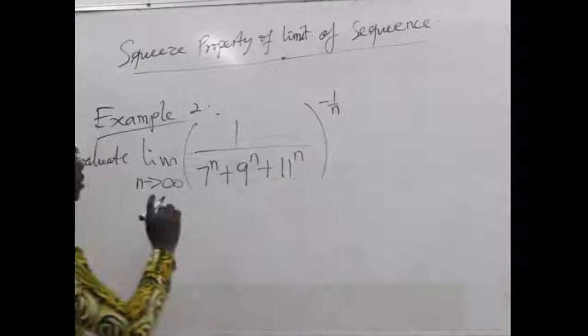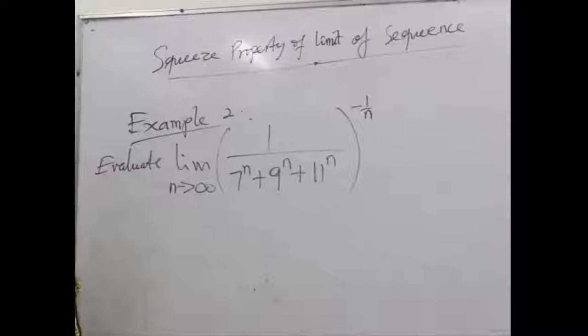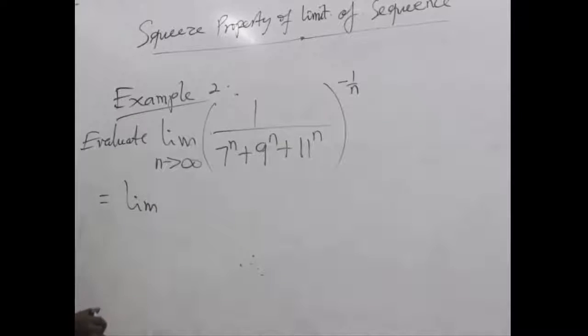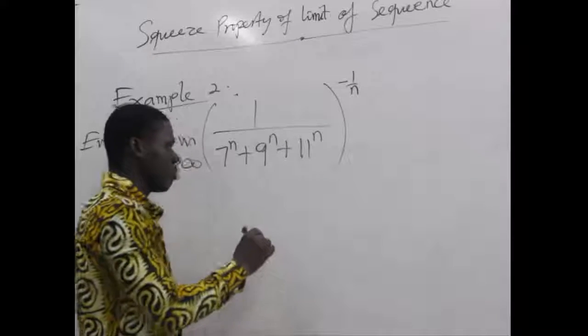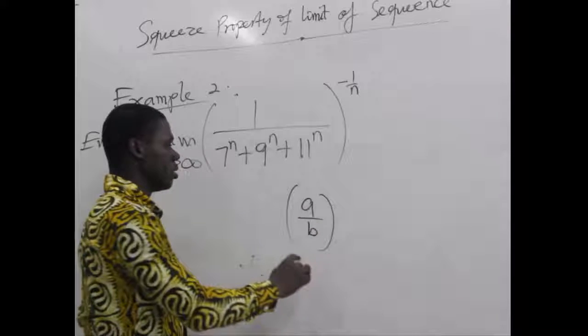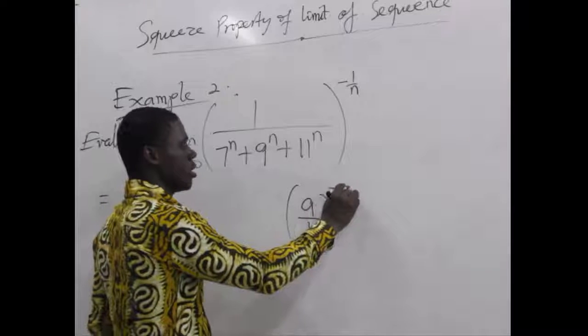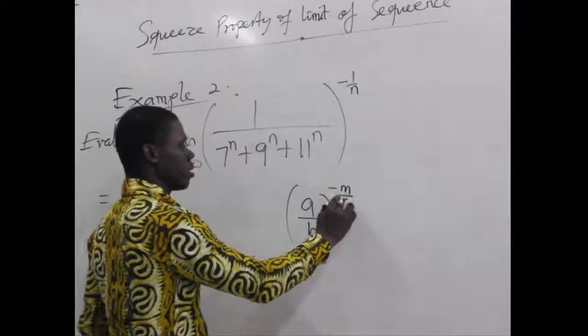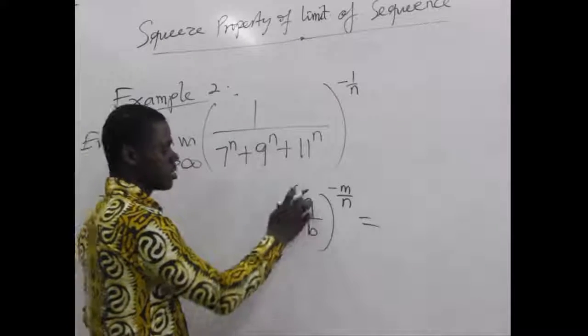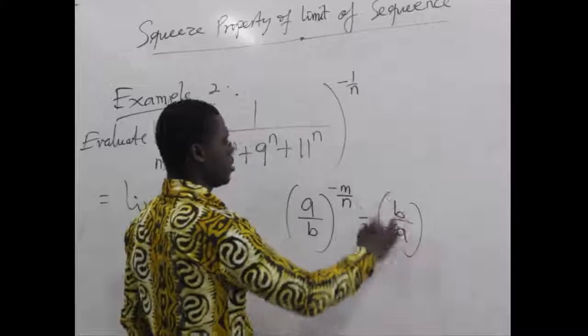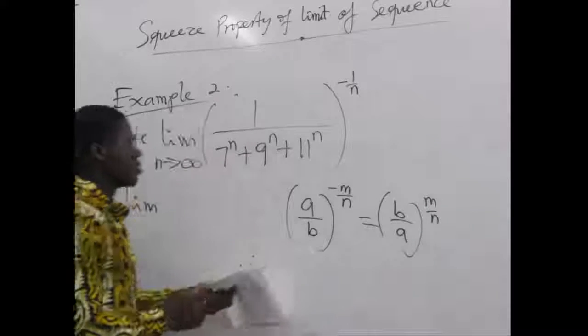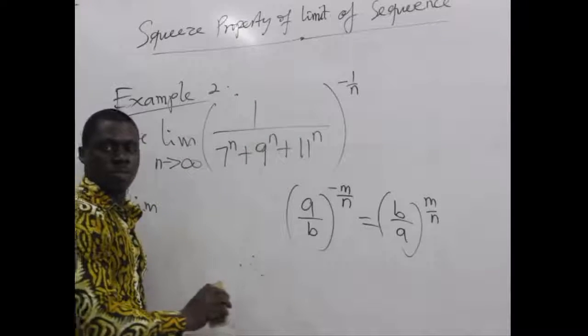Let's begin and see that we can rewrite this in a different form. From indices we can explain something. When you have a/b raised to the power negative m/n for instance, this is the same as saying that when we reciprocate this it gives us b/a, then the negative sign of the exponent changes to positive m/n. We want to use that and rewrite this to look a little bit nicer.